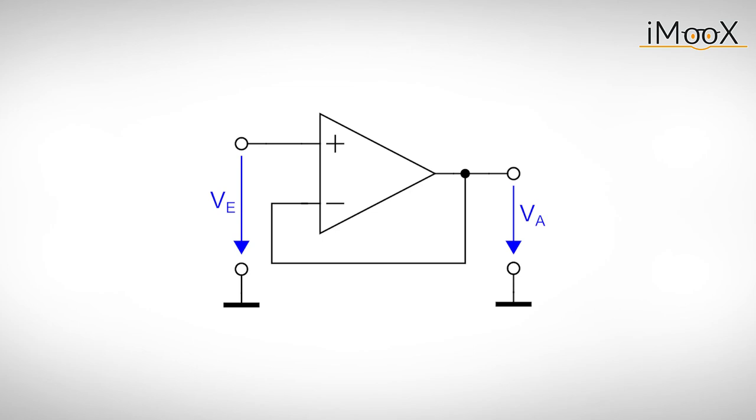Another circuit you might want to use from time to time is the voltage follower. As you can see, it's just an operational amplifier with its inverting input connected to the output. We again apply the rule that VD is zero volts. This lets us determine the output voltage VA to be equal to the input voltage VE.